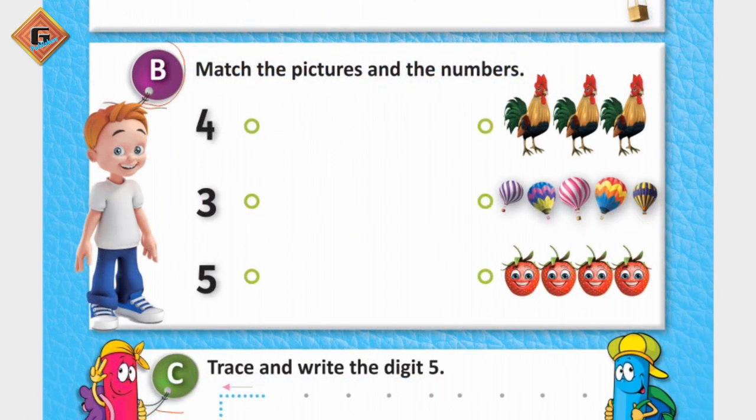Now we are going to start number B part. What we have to do in it? Match the pictures and the numbers. Here we have some numbers and here we have some pictures. What do we have to do? We have to count numbers and match pictures with pictures.